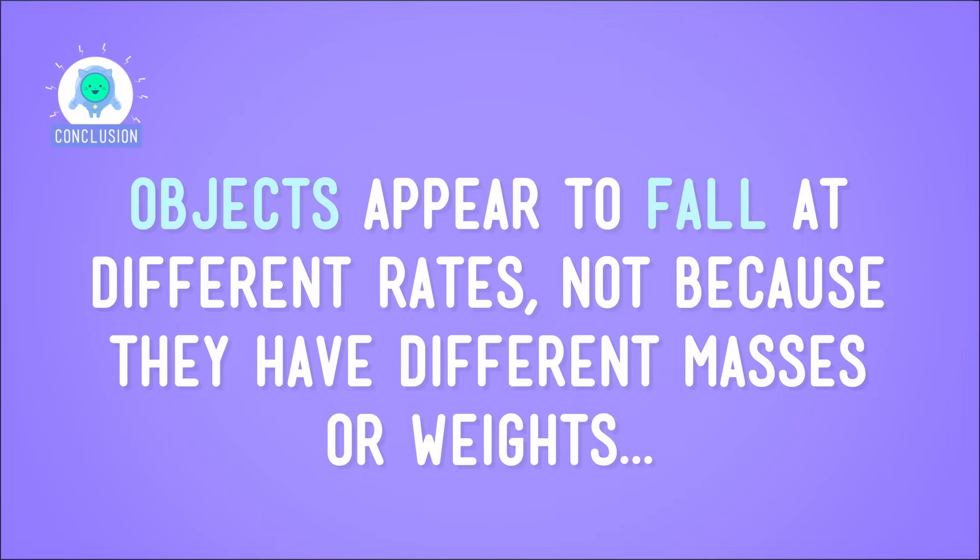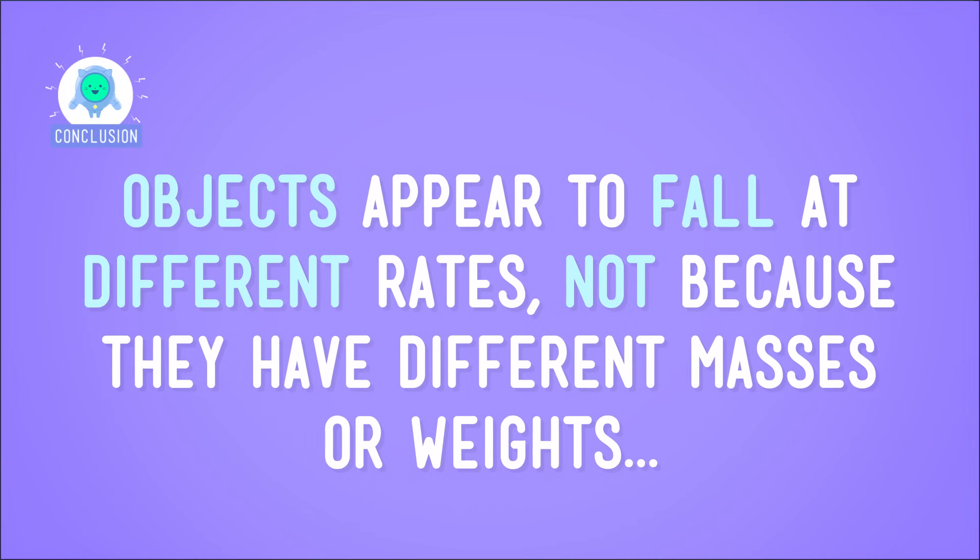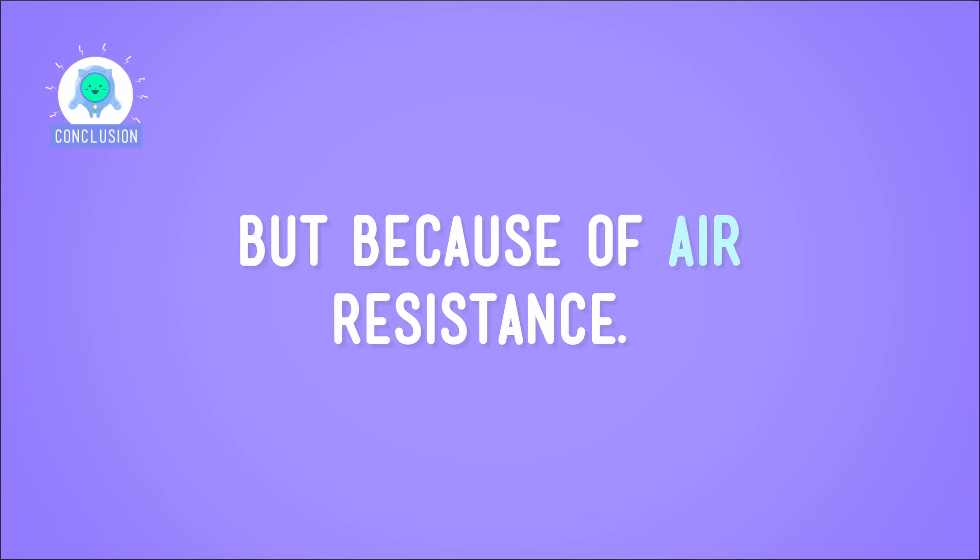So, based on the results of our experiment, we can say, at least here on Earth, objects appear to fall at different rates, not because they have different masses or weights, but because of air resistance, the force that the Earth's atmosphere has on objects as they fall.